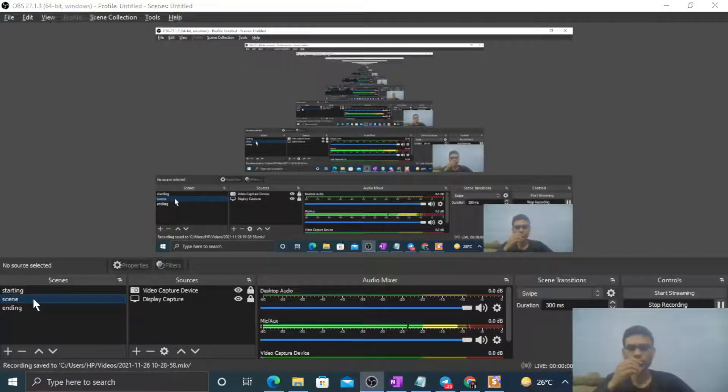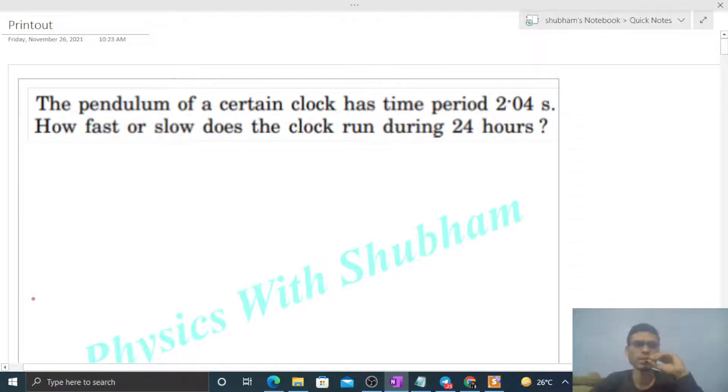Okay, hi everyone. So today let's discuss this interesting problem. It says the pendulum of a certain clock has a time period 2.04 seconds. How fast or slow does the clock run during 24 hours?